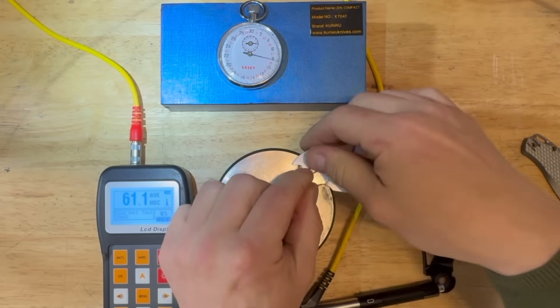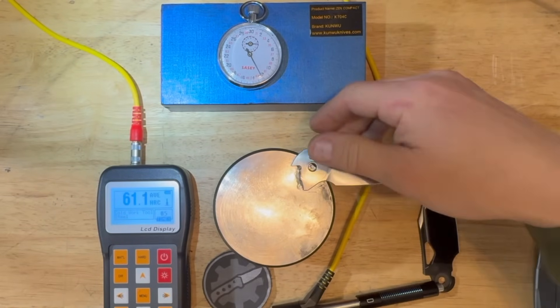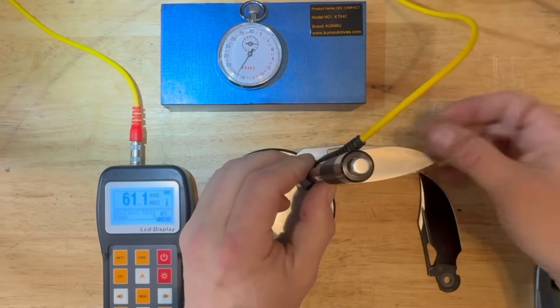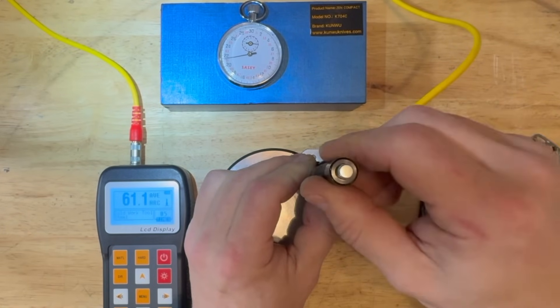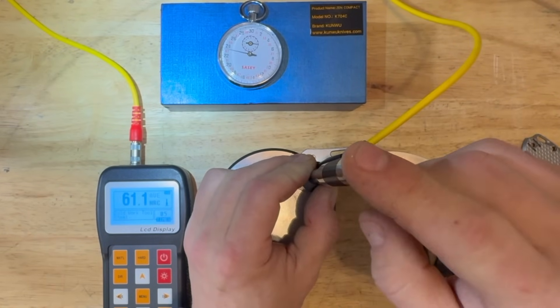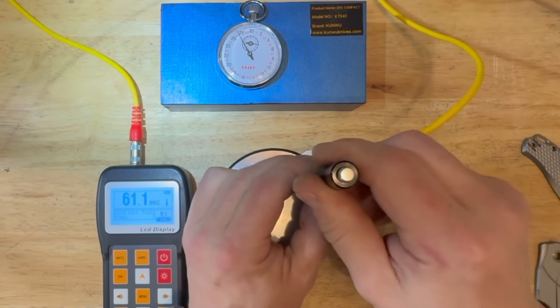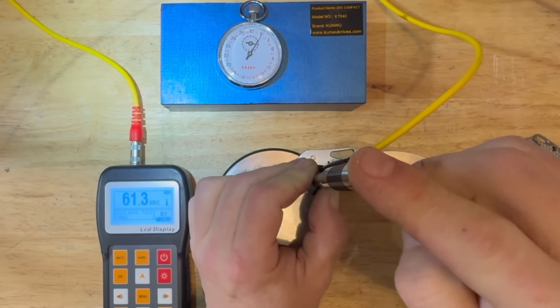Back to DLC coating. So, this process causes the temperature on the surface of the blade to be between 300 and 350 Fahrenheit. Which for some steels is not a big deal. Like S30V, for example, is tempered at 400 to 450 Fahrenheit. So, it just gets hot and nothing happens. That is not the case with LMAX.